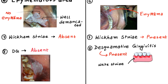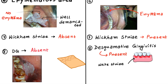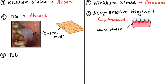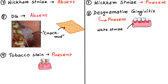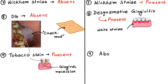Leukoplakia has a typical cracked mud-like appearance — here you can see the cracked mud appearance. The next point is tobacco stain. In case of Leukoplakia, as most patients are tobacco chewers or smokers, you can see brown stain on the teeth, and sometimes gingival pigmentation is also visible. This tobacco stain is mostly absent in case of Lichen Planus.